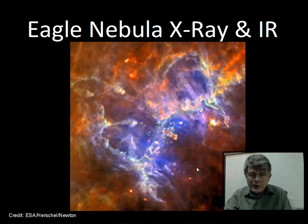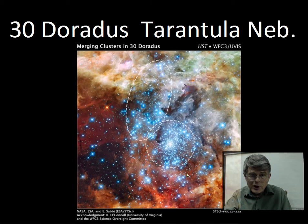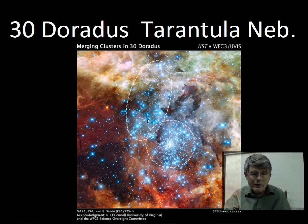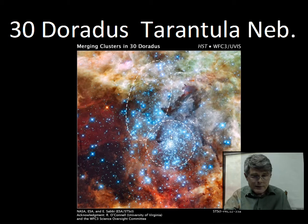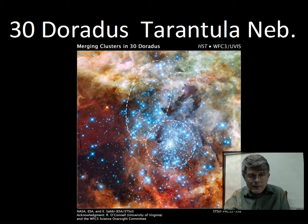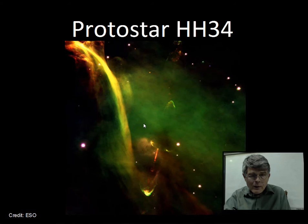These gas clouds are contracting and the temperature is getting higher, so now not just radio energy is emitted but infrared light is being emitted from the regions where stars are forming. The 30 Doradus Tarantula Nebula in the Large Magellanic Cloud is an example of star clusters — hundreds of stars or more — relatively young bright blue stars that have formed out of this gas cloud.